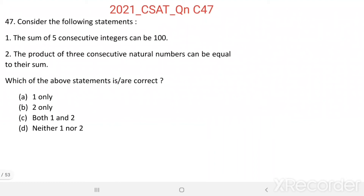Question number 47. Consider the following statements. Statement 1: The sum of 5 consecutive integers can be 100. Statement 2: The product of 3 consecutive natural numbers can be equal to their sum. Which of the above statements is or are correct?